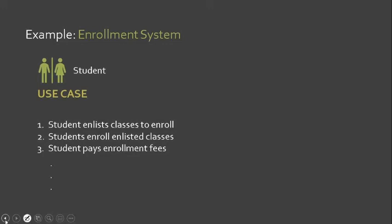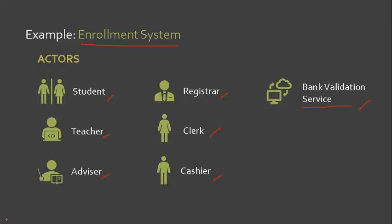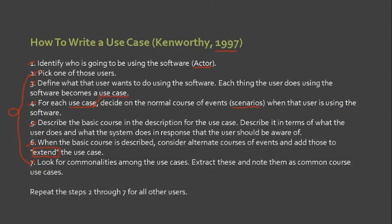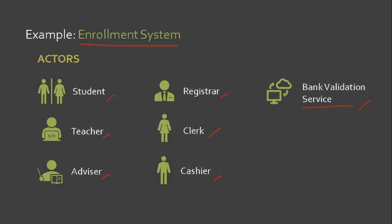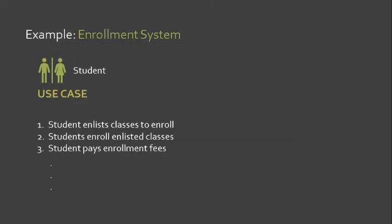Let's go back to step three of Ken Worthy: define what the user wants to do using the software. Each thing the user does using the software becomes a use case. If we understand step three, we can identify the use cases for each actor.